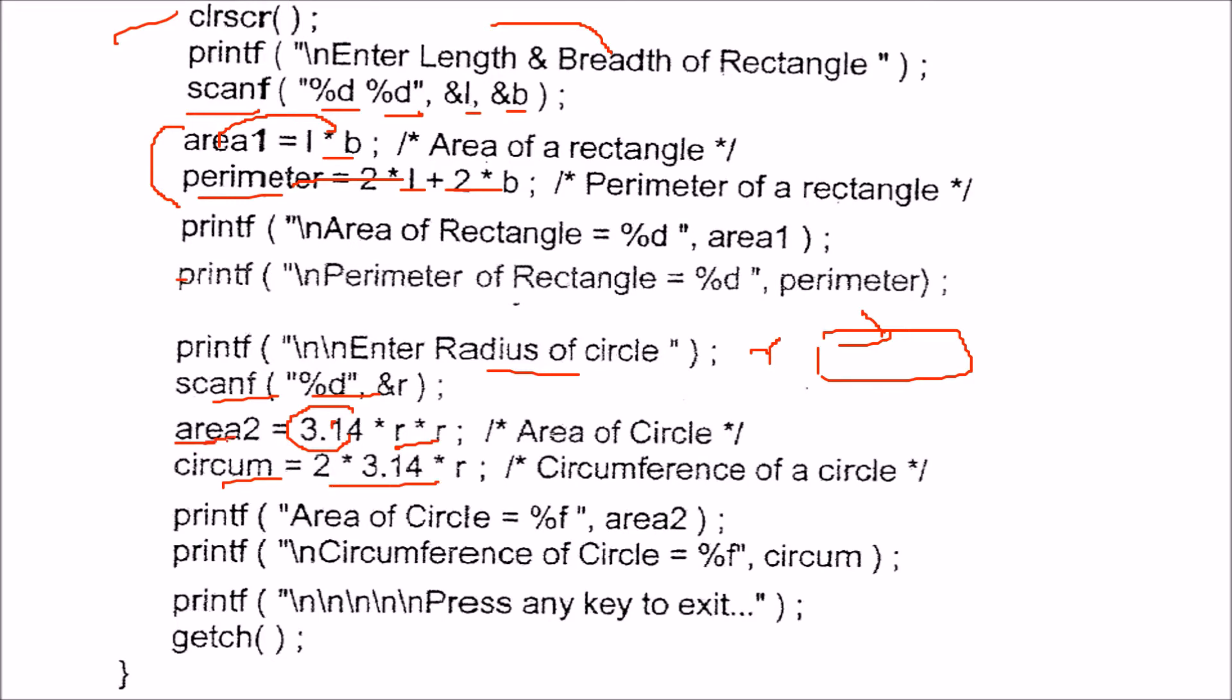Now area2 can be printed and circumference will be printed. This will be %f and %f. You can come out. This getch() is for essentially that purpose only.